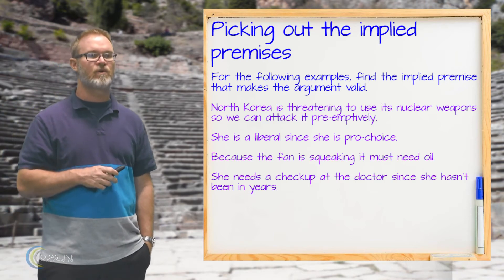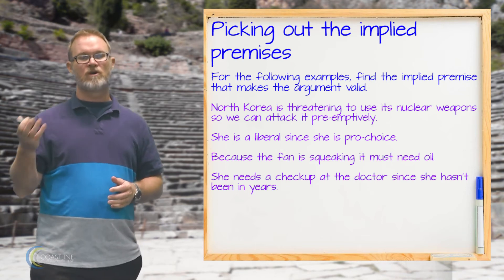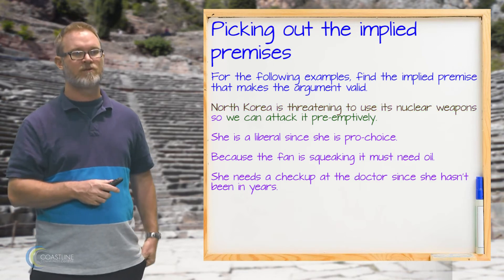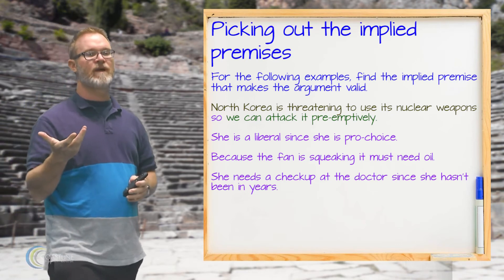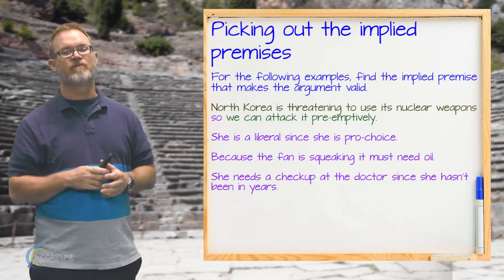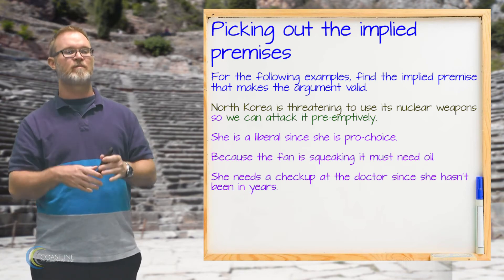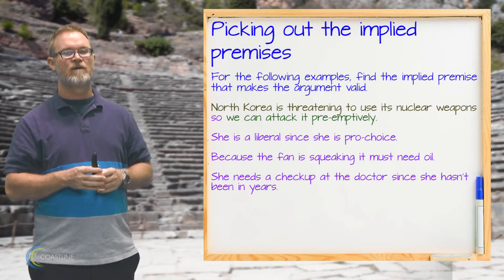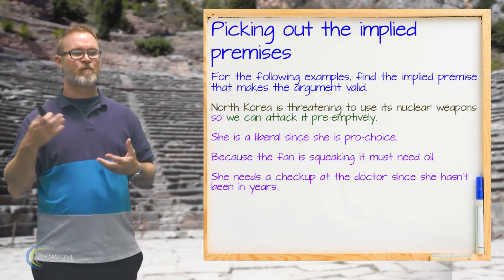The first example: North Korea is threatening to use its nuclear weapons, so we can attack it preemptively. The conclusion is that we can attack North Korea preemptively, and the stated premise is that North Korea is threatening to use its nuclear weapons. To make this valid, we need an implied premise like: any country that's threatening to use its nuclear weapons can be attacked preemptively.